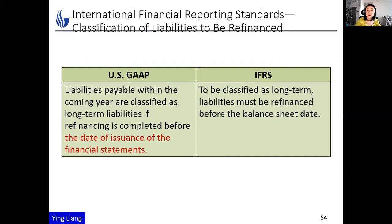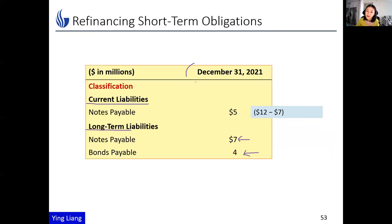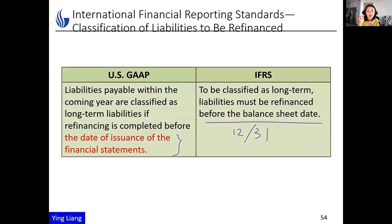There is a difference in how to classify these liabilities between US GAAP and IFRS. The main difference is timing. Under US GAAP, the refinancing must be demonstrated before the date of issuance of the financial statements, which is typically about three months after the fiscal year end — so around March. Under IFRS, you must demonstrate the ability before the balance sheet date itself, which is December 31st. So US GAAP is more lenient, giving companies more time to secure the refinancing agreement.